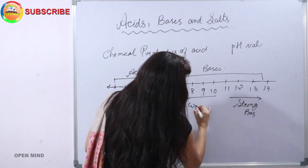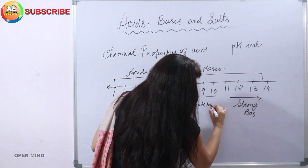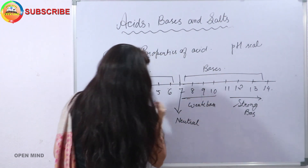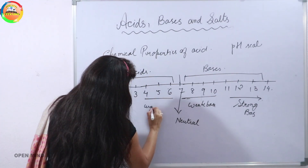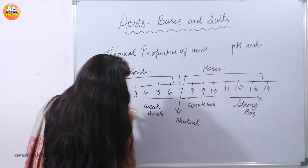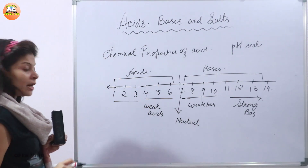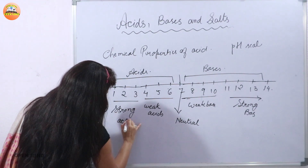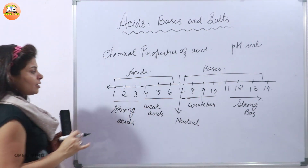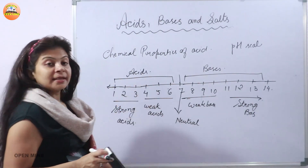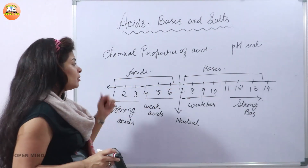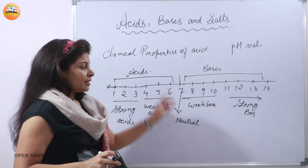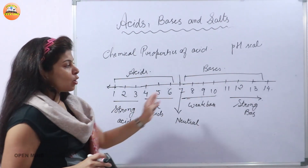Values near 7 are considered weak bases, and 7 itself is neutral. Values of 4, 5, or 6 are considered weak acids, while pH values of 1, 2, or 3 are considered very strong acids. So one property we can write down is: acids always have a pH value less than 7, and bases have a pH value more than 7, from 7 to 14.